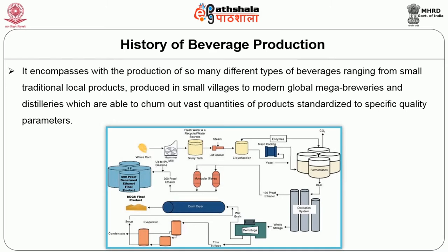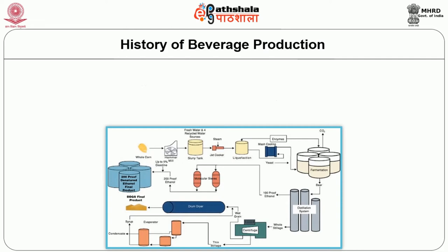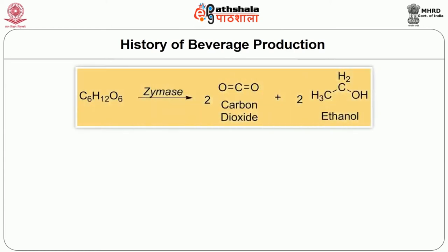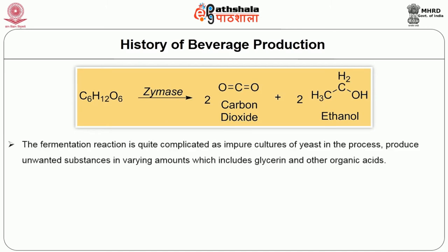Ethanol has been made since ancient times by the fermentation of sugars by yeast, and is being made on a large scale today in industrial settings. All beverage ethanol and more than half of the industrial ethanol is still made by this process. Starch from potatoes, corn and other cereals can serve as raw material. The yeast enzyme zymase changes these simple sugars into ethanol and carbon dioxide. The fermentation reaction is quite complicated as impure cultures of yeast produce unwanted substances including glycerin and other organic acids.